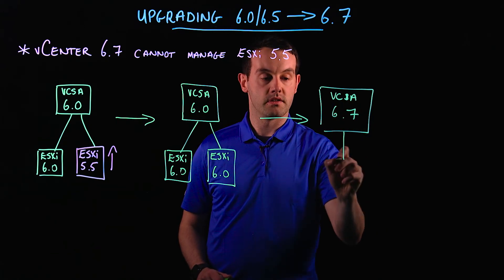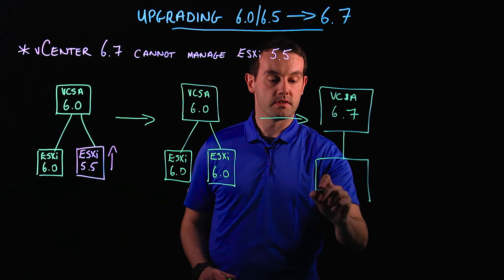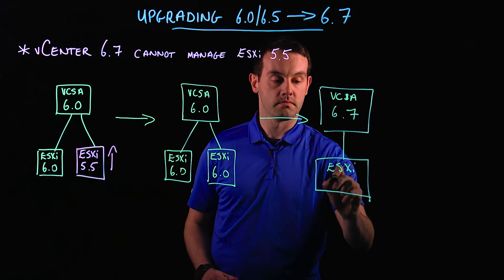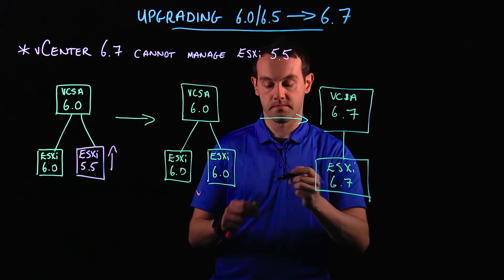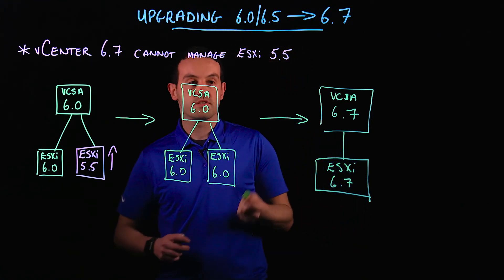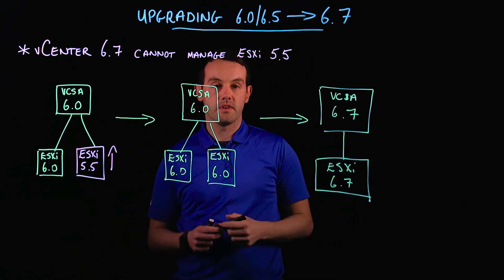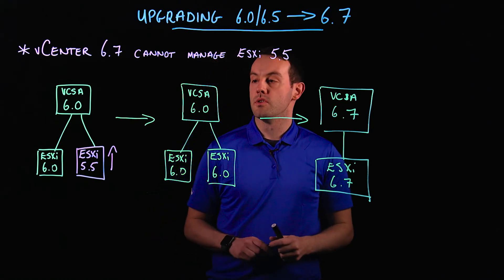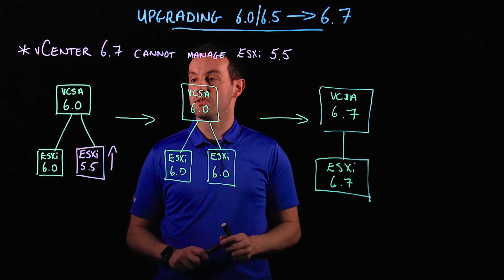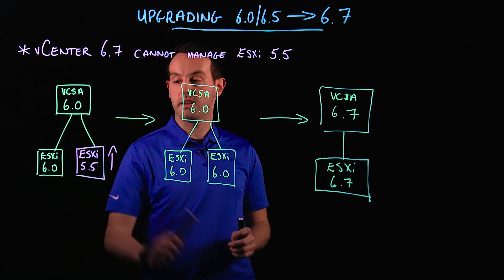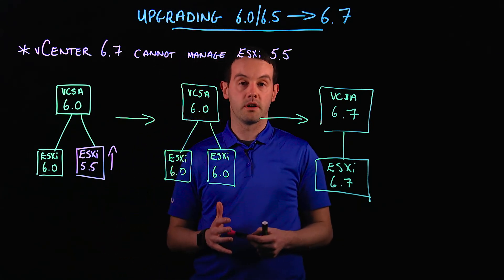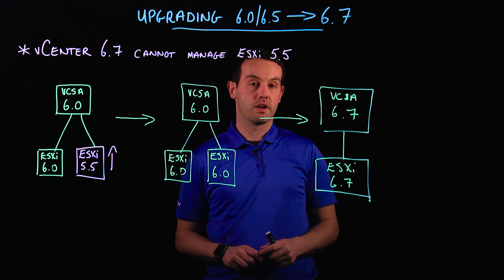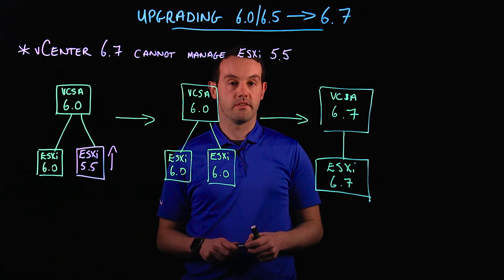Once that's upgraded, we can upgrade all our hosts to ESXi 6.7 as well if we wish. That's just a quick illustration on upgrading from vSphere 6.0 or 6.5 to 6.7. The important note, regardless of which version you're starting with, is that if you have any ESXi 5.5 hosts in the environment, you need to upgrade them first to a minimum of 6.0 before upgrading the vCenter to 6.7.